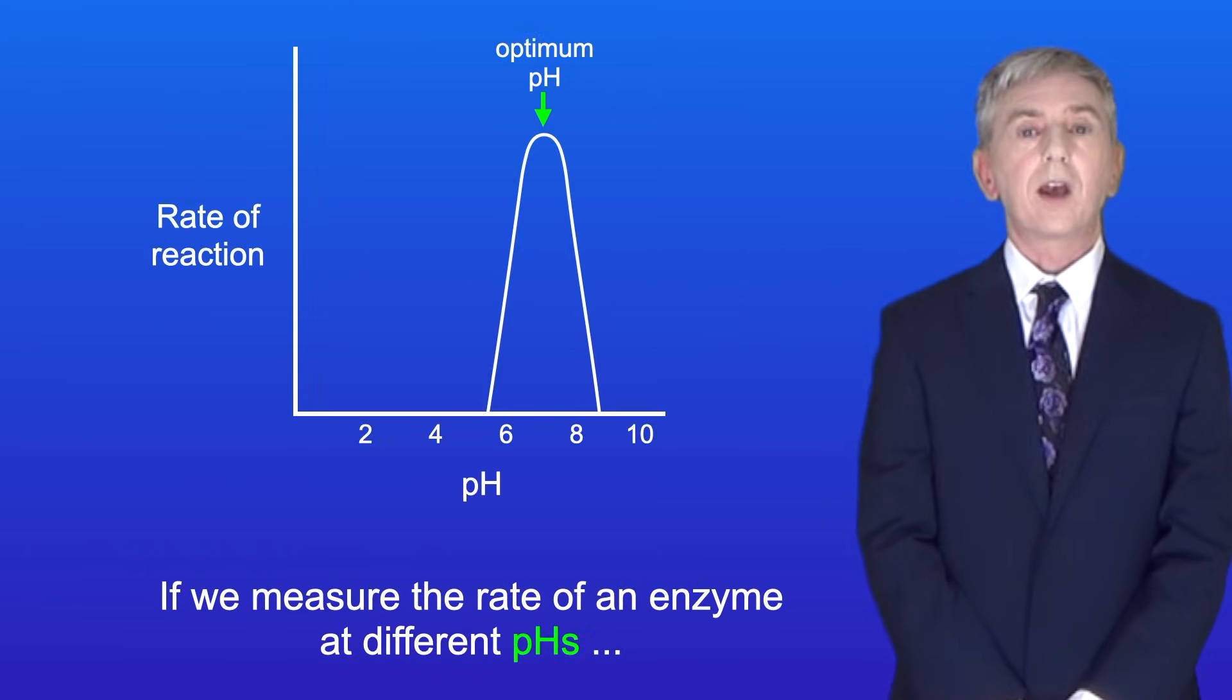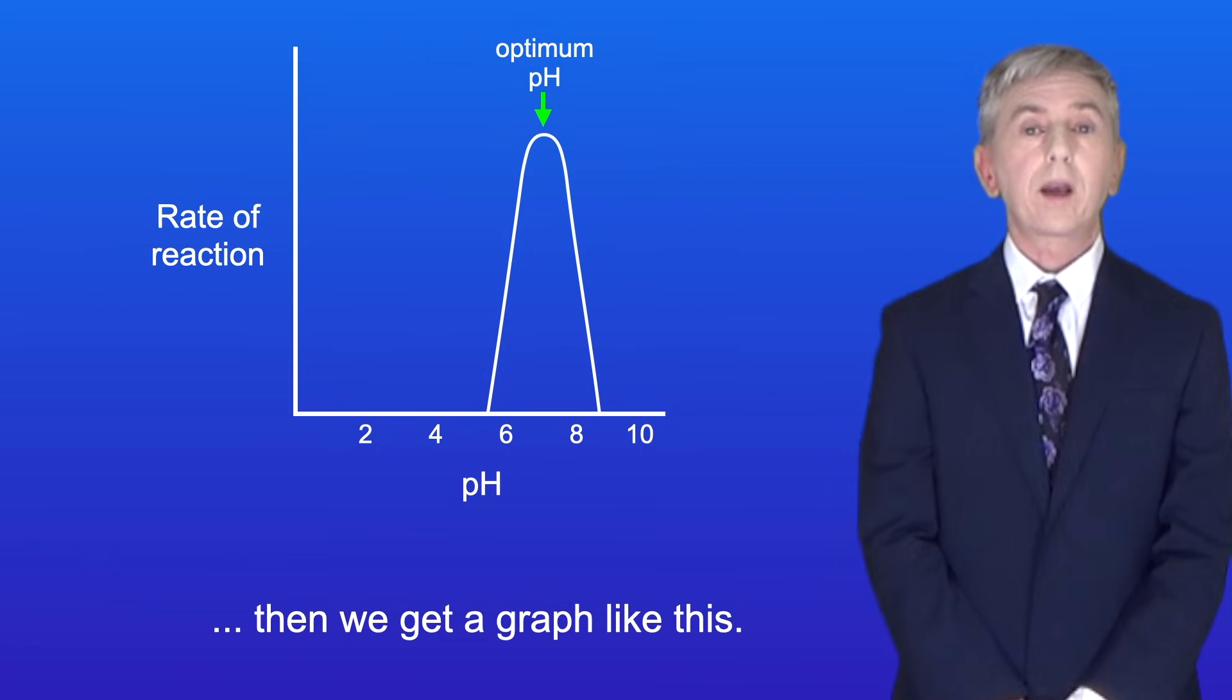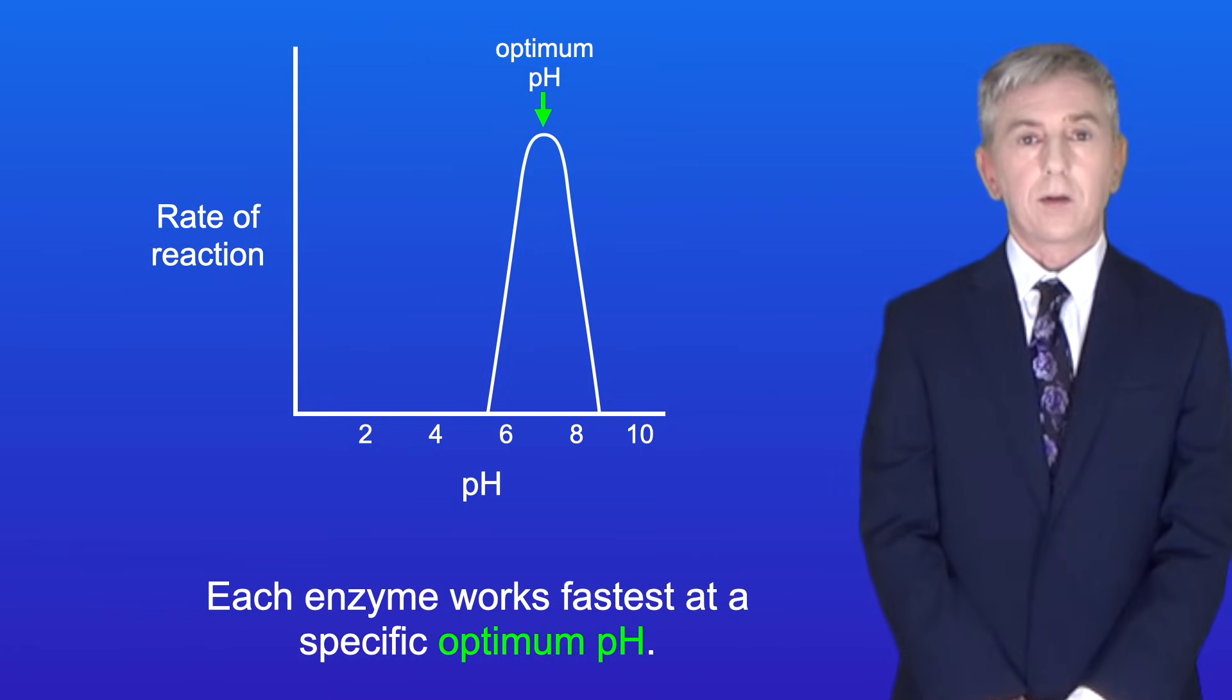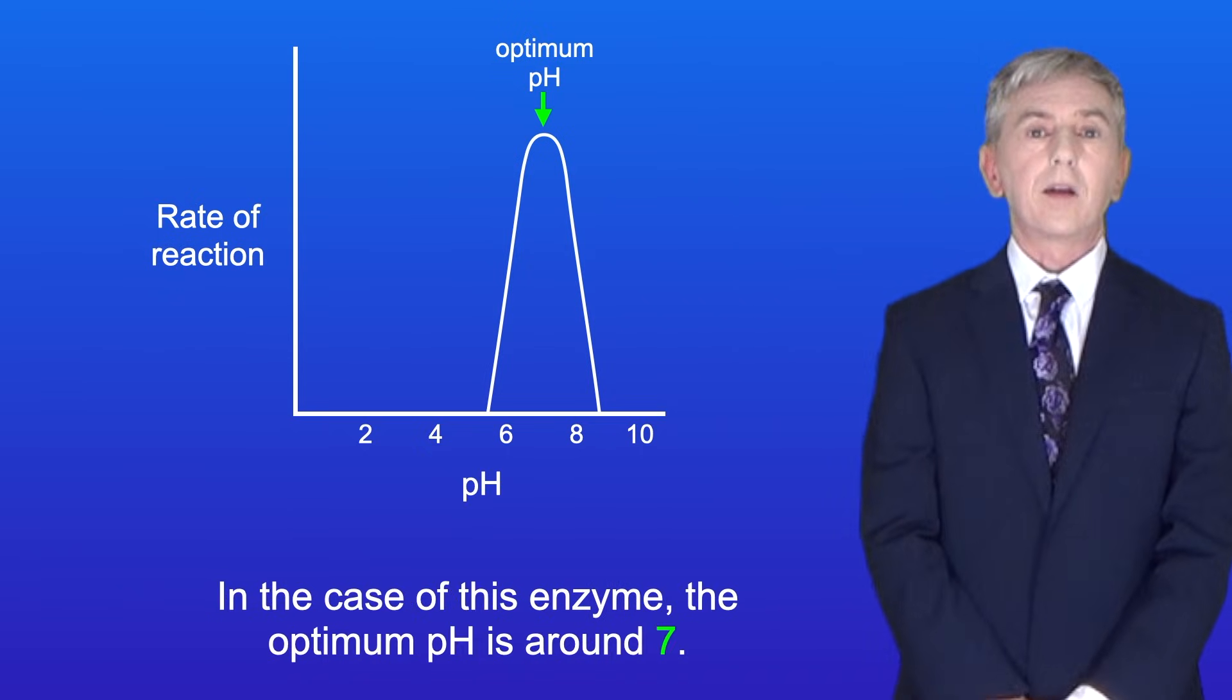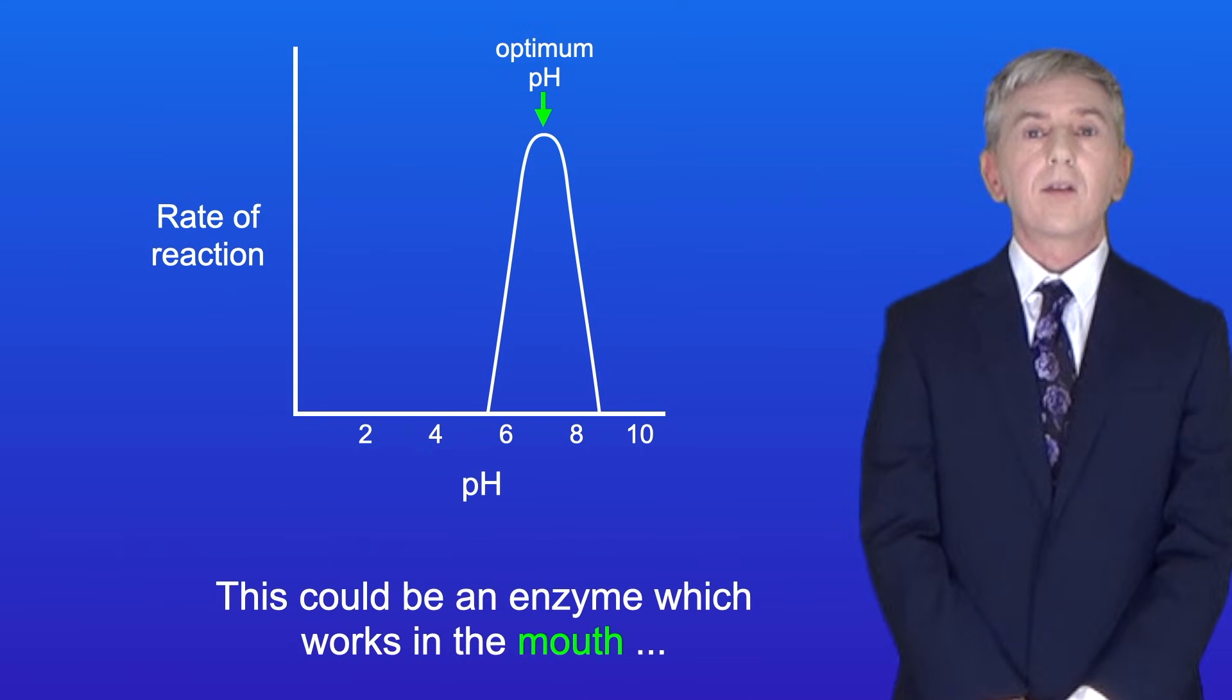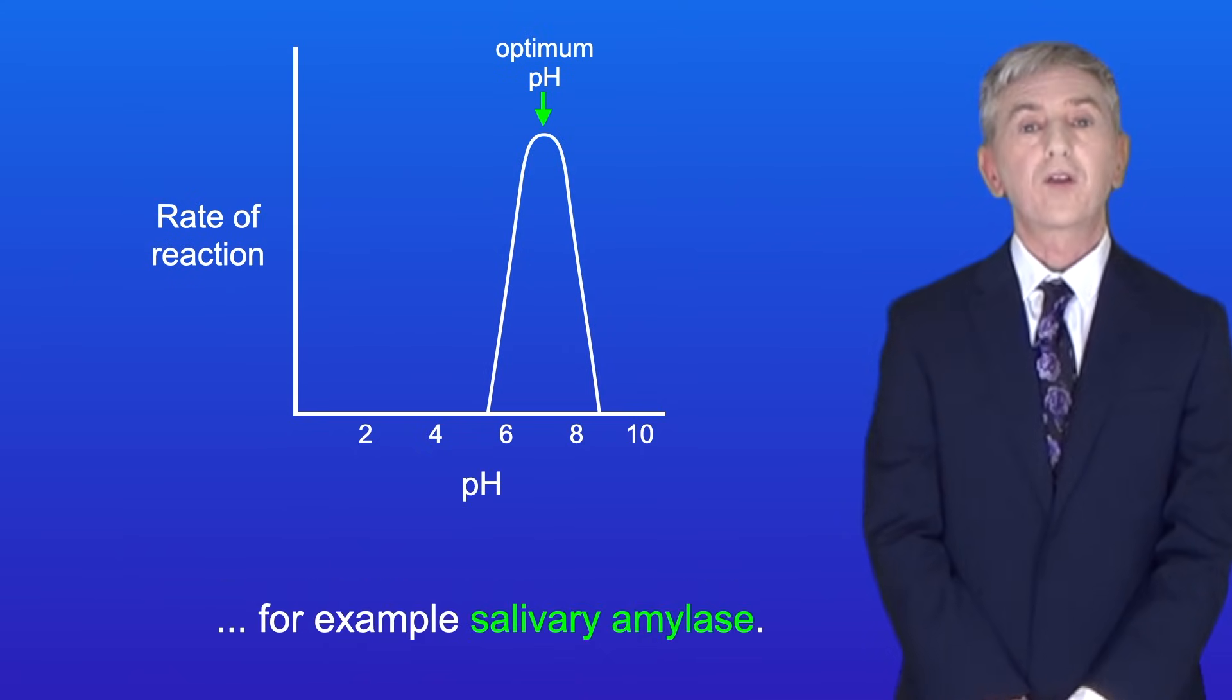If we measure the rate of an enzyme at different pHs, then we get a graph like this. Each enzyme works fastest at a specific optimum pH. In the case of this enzyme, the optimum pH is around 7. This could be an enzyme which works in the mouth, for example salivary amylase.